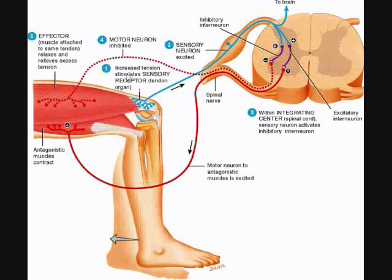The example here is the quadricep muscle again. The main part of the reflex is the dotted line because it's an inhibitory reflex — this dotted line is the motor neuron of the tendon reflex. This reflex is polysynaptic and it is also ipsilateral, much like the stretch reflex, which is also ipsilateral because it's affecting the same muscle that was stimulated.